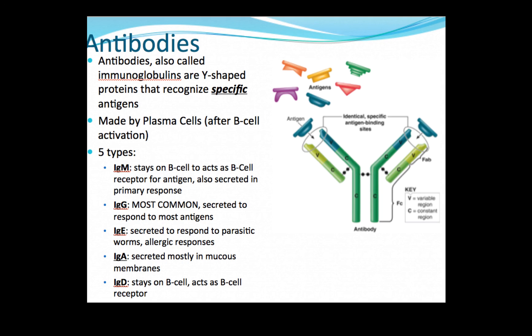IgD also stays on the B cell and acts as B cell receptors and are produced early in the response. IgG is the most common and is secreted in response to most antigens in the body. IgE is secreted mostly in response to parasitic worms and in allergy.